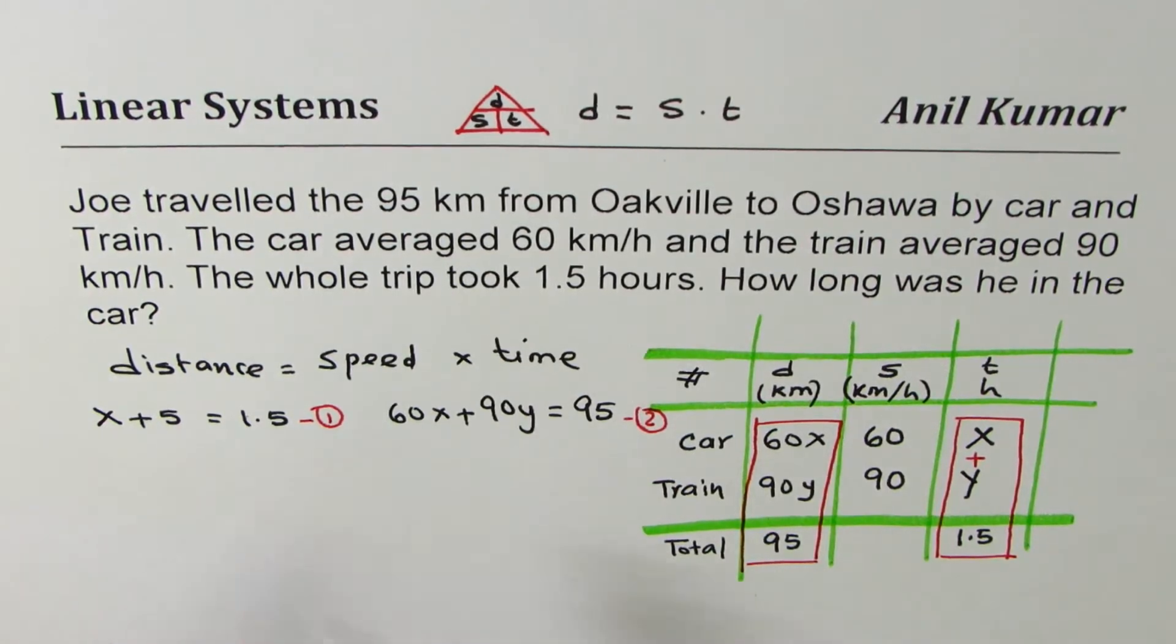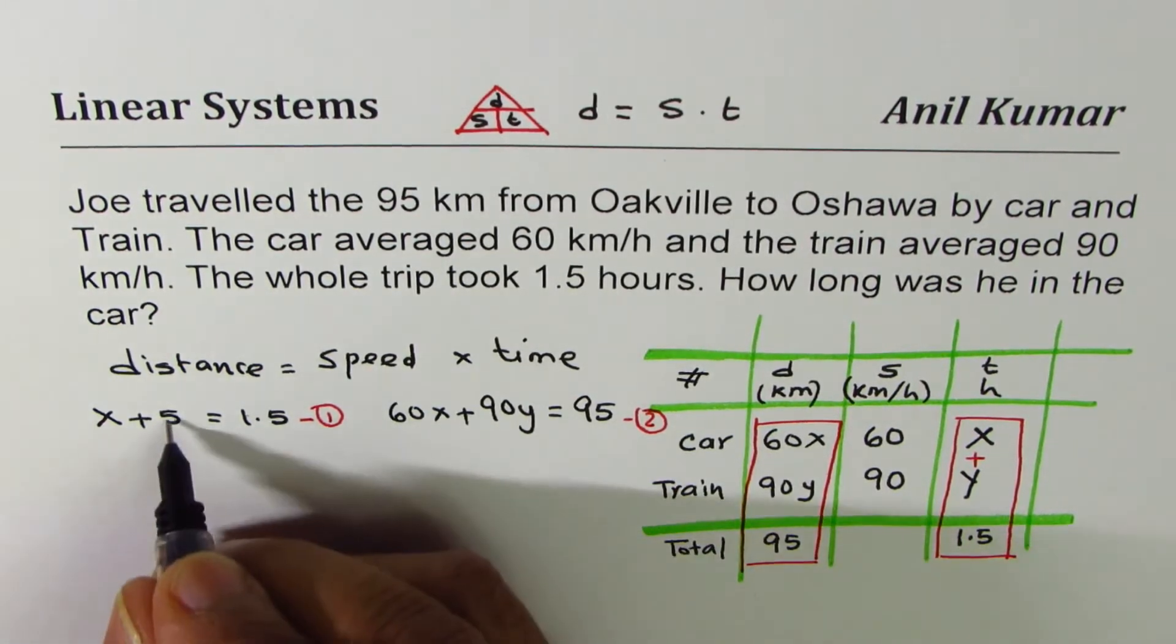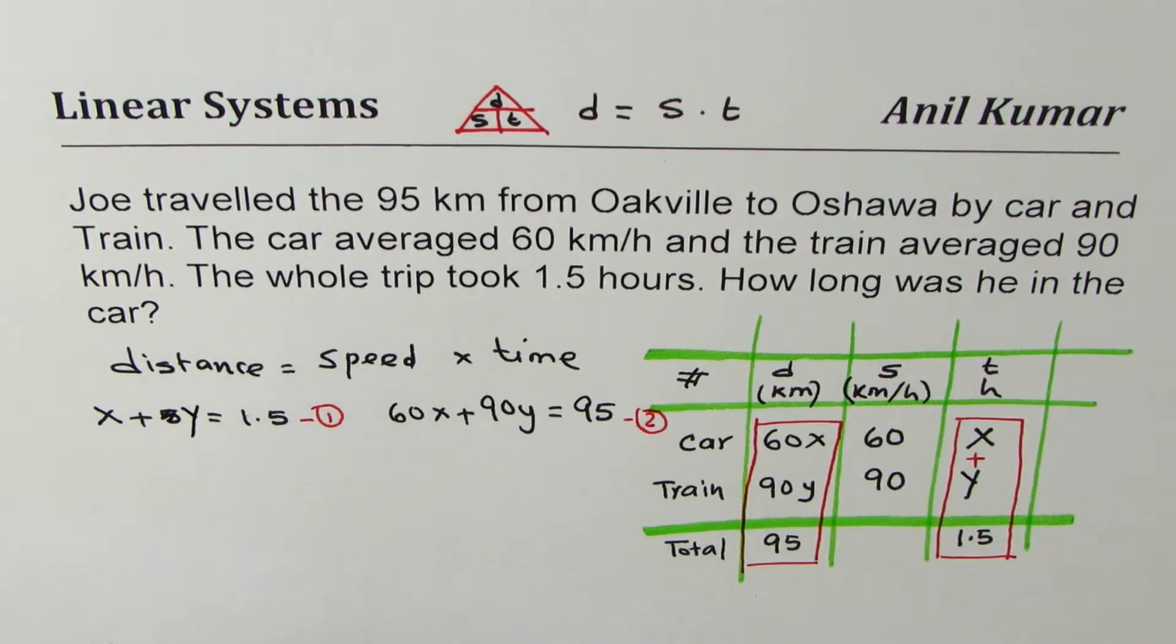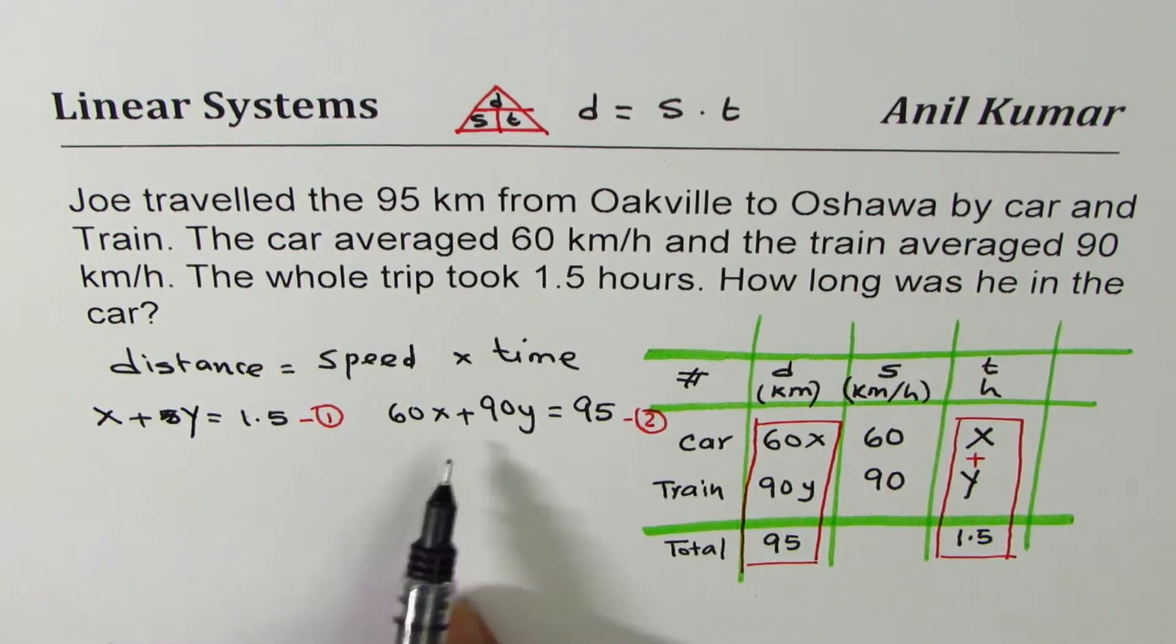We have two variables. I should have written y. I don't know, y wrote five, x plus y. We have two equations and two variables. So you can always solve for both these variables.